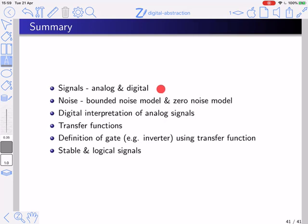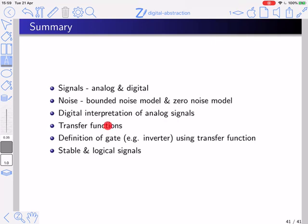In summary: we described analog and digital signals, where digital signals are interpretations of analog signals. We described the bounded noise model and zero noise model, showing how analog signals are interpreted as digital signals — explaining why computers are said to operate over 0 and 1, since in stable states analog signals are interpreted as either 0 or 1. We defined transfer functions, gates using transfer functions, and what stable and logical signals are.